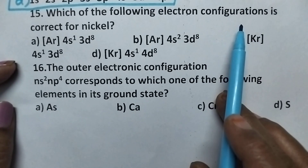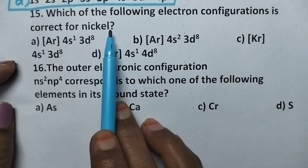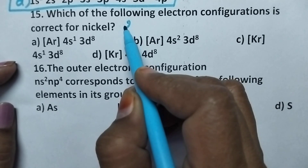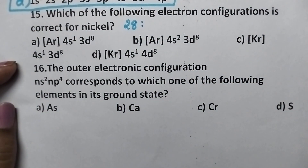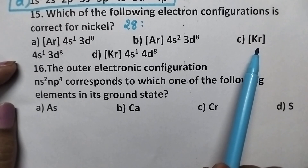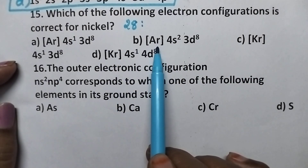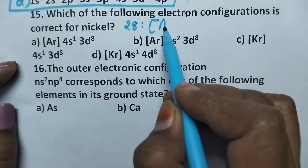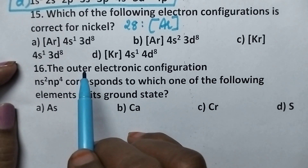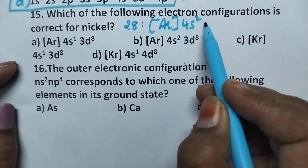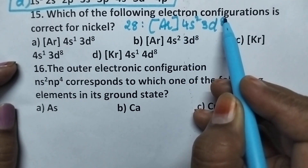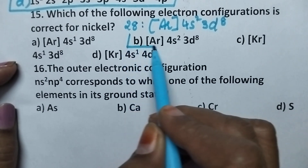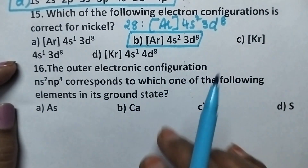Which of the following electronic configurations is correct for nickel? The atomic number of nickel is 28. Here the configuration is given in terms of noble gas notation. The nearest noble gas is argon. Its configuration is [Ar] with 18 electrons, followed by 4s², 3d⁸, giving altogether 28 electrons. So option B is the right answer.